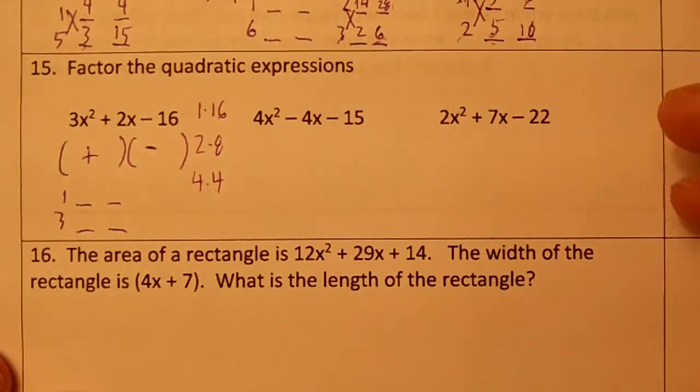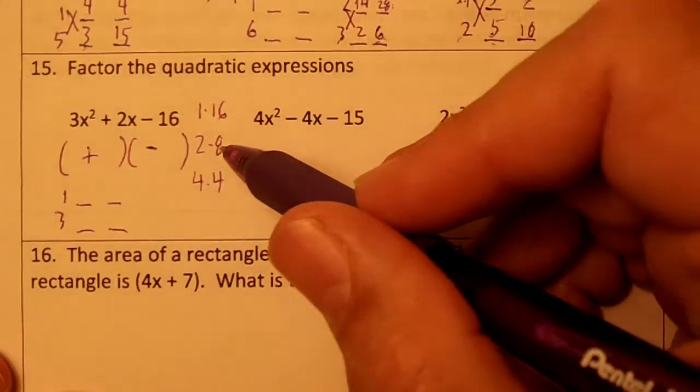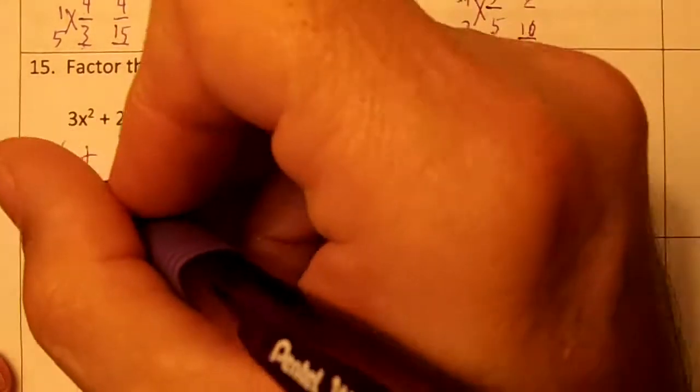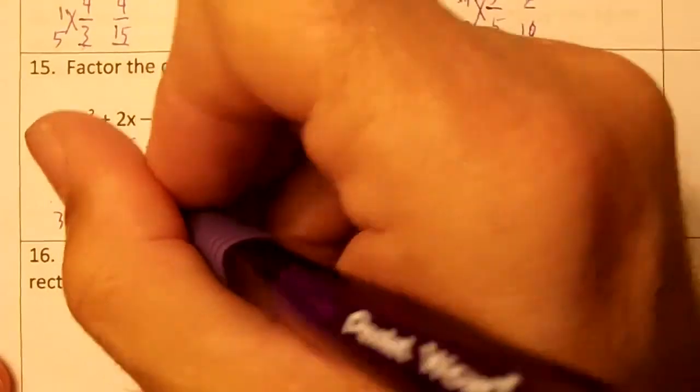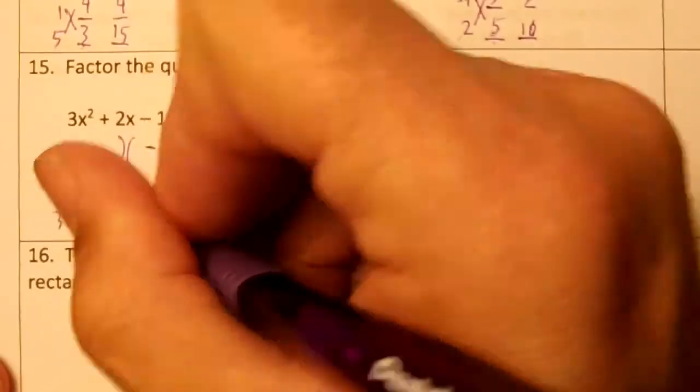Take your time. You're going to use the 8 and the 2. So you'll put the 8 by the 1 and the 2 by the 3. 1 times 8 is 8.